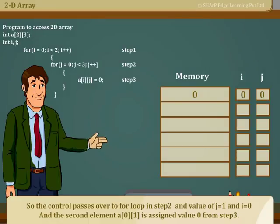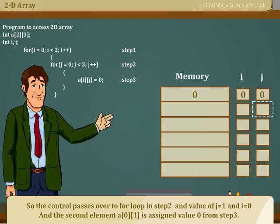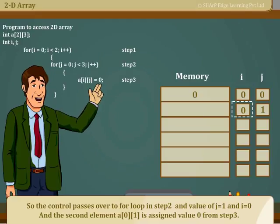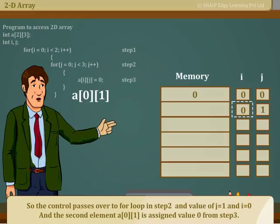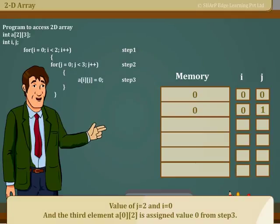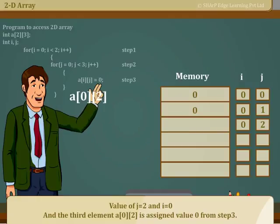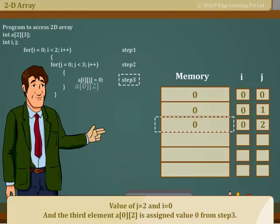So, the control passes over to for loop in step 2 and value of j equals 1 and i equals 0, and the second element A[0][1] is assigned value 0 from step 3. Now, the control passes to the for loop and the process goes on. Value of j equals 2 and i equals 0, and the third element A[0][2] is assigned value 0 from step 3.